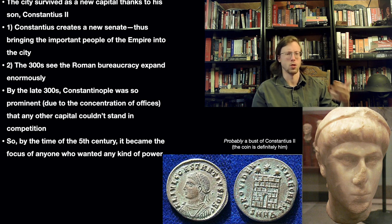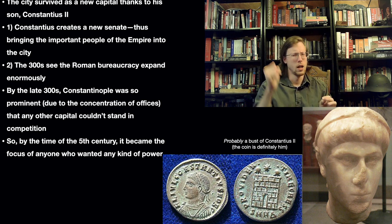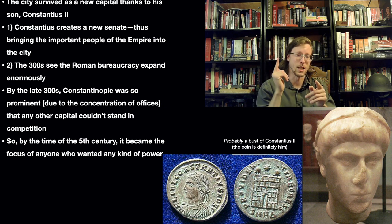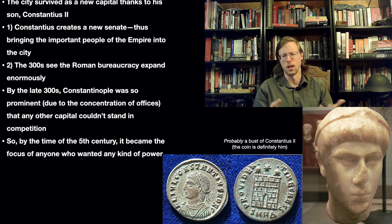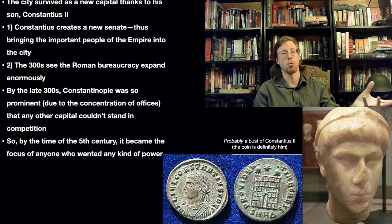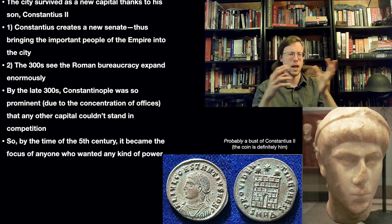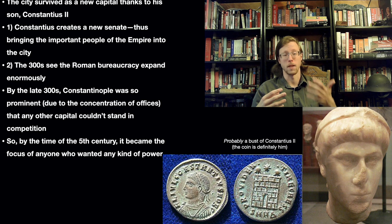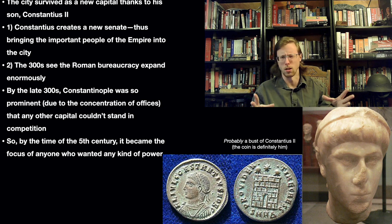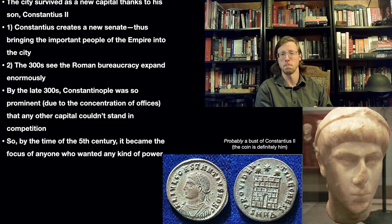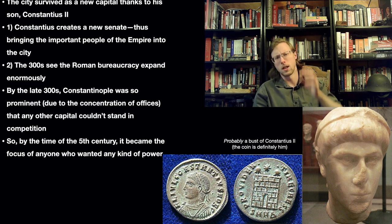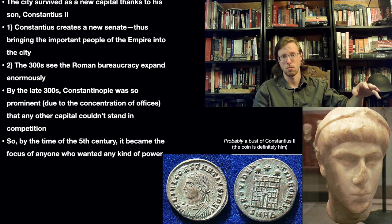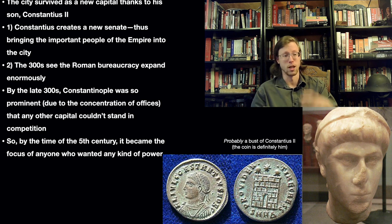We have Constantine's son, Constantius II. Constantius creates a new senate in Constantinople, and by creating a new senate, he brings important people from the Western Empire over and basically makes them stay, giving them a home. At the same time, in the 300s, Roman bureaucracy expands enormously — by the 400s, it potentially employs something like 25,000 to 30,000 people. So by the late 300s, that city is firmly the capital, because all the governing centers are there.